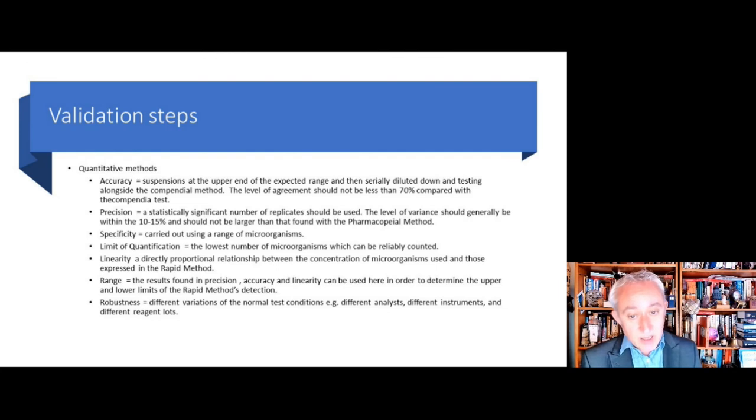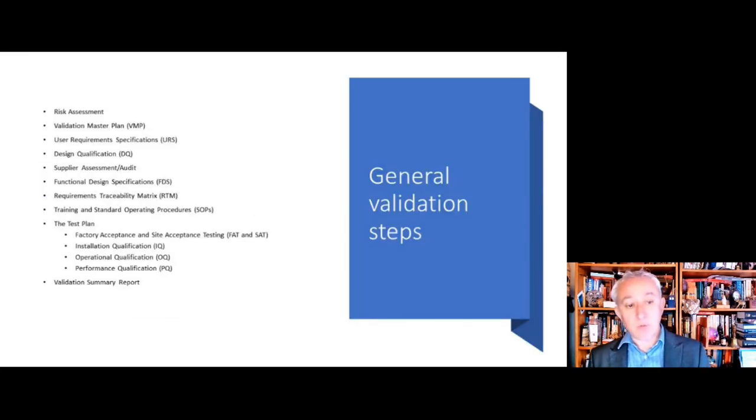We probably need a test of specificity, particularly going back to those particle counters, because they might be affected by clothing fibers or something else that can fluoresce, which might give a false reading as a biological event. We should understand the limit of quantification. We should have a degree of method linearity. This is a test to demonstrate where there's a directly proportional relationship between microorganisms used and those expressed by the rapid method. To have an understanding of the range, the upper and lower limits, and of the robustness under different test conditions using different analysts, perhaps using different reagents. So there's a lot of subjecting the method to different levels of rigor.